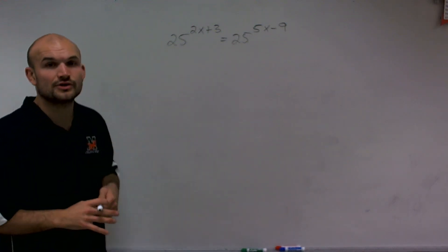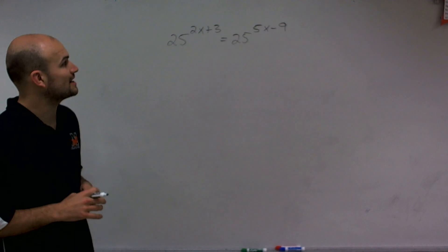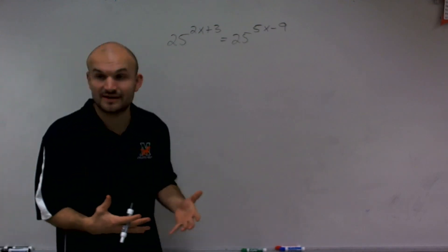OK, so what I want to do is show you how to solve for x when we have 25^(2x+3) equals 25^(5x-9).